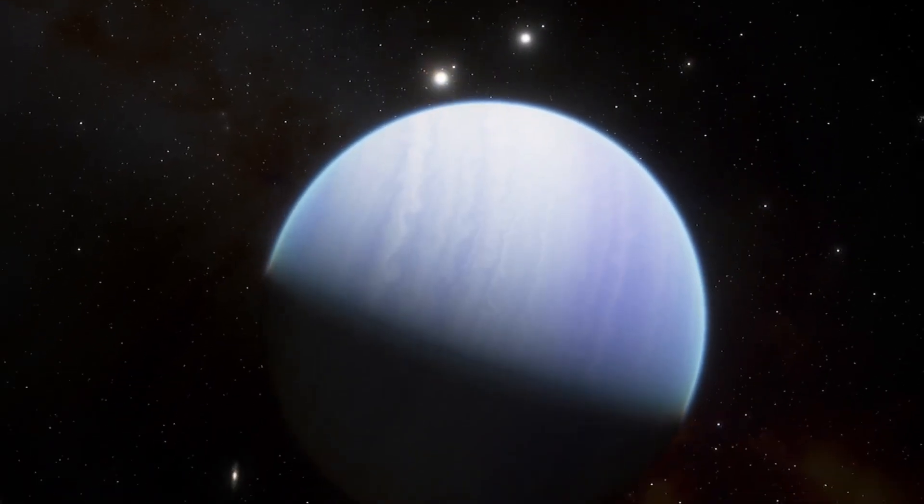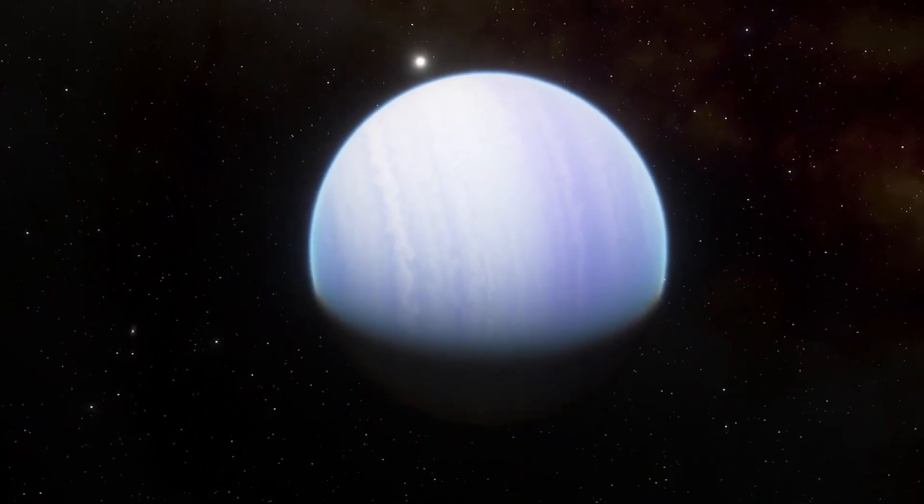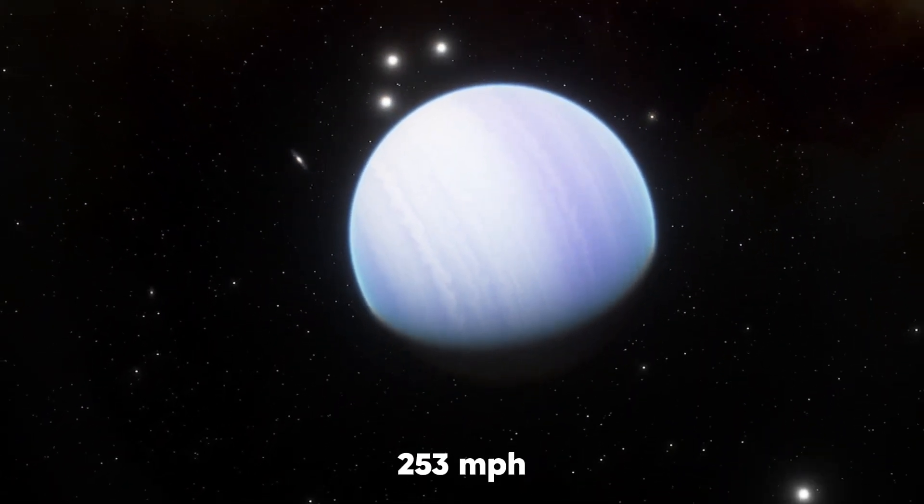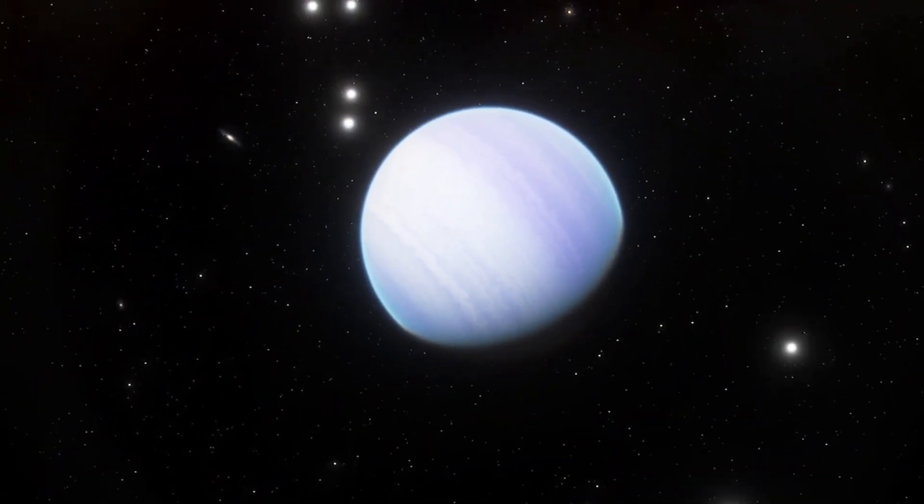That's seven times the speed of sound. For comparison, the strongest winds ever recorded on Earth were just 253 mph. And that deep blue color? It's not coming from oceans. It's caused by light scattering through a hazy atmosphere filled with silicate particles. In other words, glass.